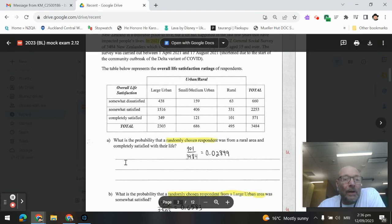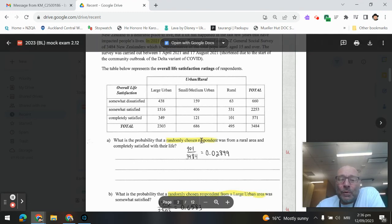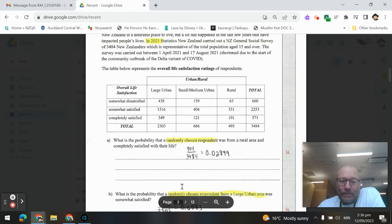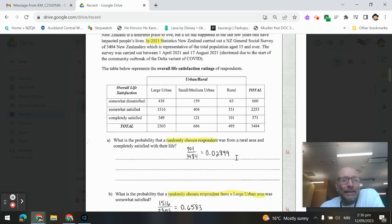Okay, patai tuatahi, first question: What is the probability that a randomly chosen respondent was from a rural area and completely satisfied with their life? When it says a randomly chosen respondent, not randomly chosen from a certain group, just randomly chosen respondent, that's your hint that the total number of people will be the denominator of your fraction. Those from a rural area and completely satisfied - rural area is this column, completely satisfied intersection - 101 over 3484, which is 0.02899.